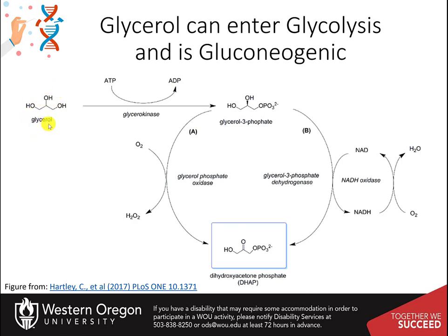Glycerol can be converted to glycerol 3-phosphate by a glycerol kinase enzyme. The glycerol 3-phosphate can then be oxidized to DHAP by either an L-glycerol 3-phosphate oxidase enzyme or glycerol 3-phosphate dehydrogenase enzyme. Here it can enter into the glycolytic or gluconeogenic pathways.